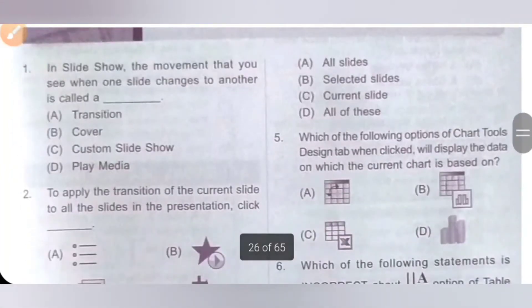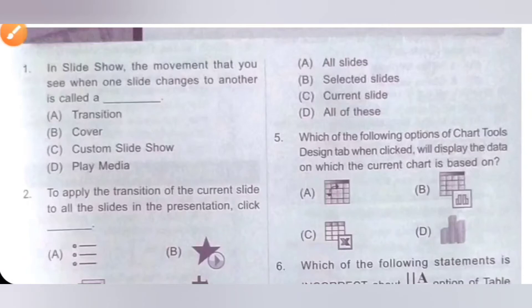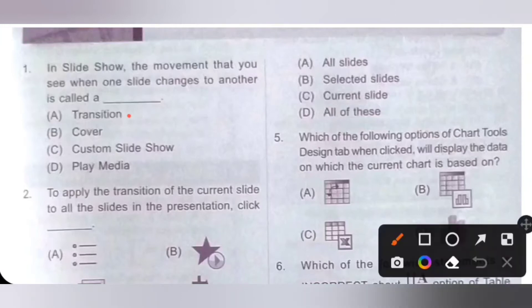In slideshow, the moment that you see when one slide changes to another is called a dash. Option A: Transition. Option B: Cover. Option C: Custom slideshow. Option D: Play media. The moment that you see when one slide changes to another is called a transition. So option A is the correct answer.